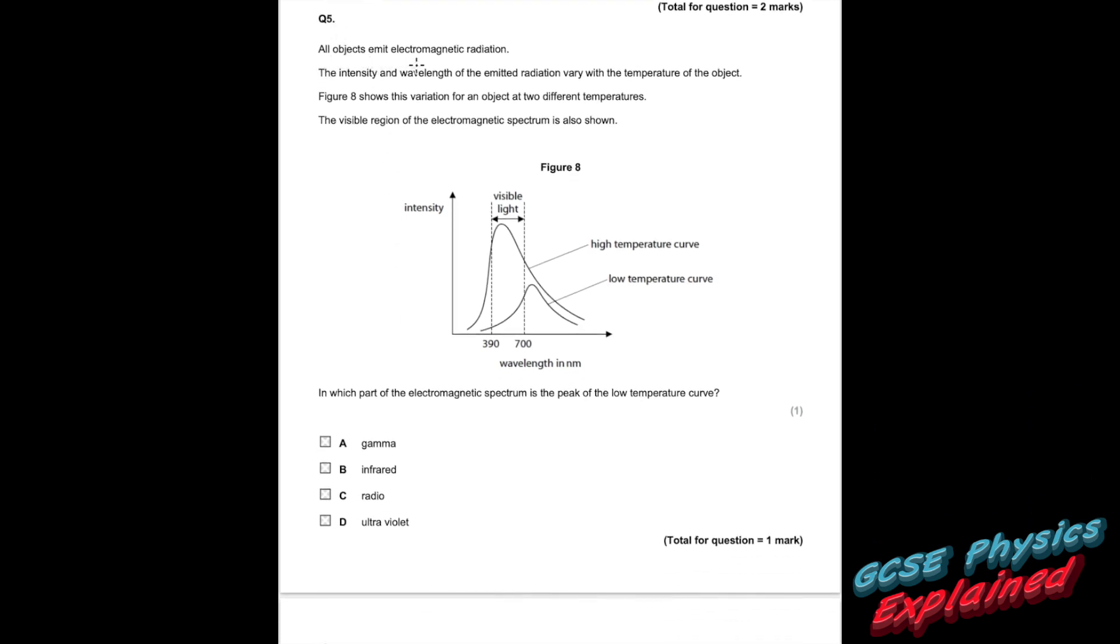Question 5. All objects emit electromagnetic radiation. The intensity and wavelength of the emitted radiation vary with the temperature of the object. Figure 8 shows this variation for an object at two different temperatures. The visible region of the electromagnetic spectrum is also shown. How many times have I told you, if you've been working your way through my videos, they just use the same questions every year. They change them slightly. It's like this year here, we've seen this graph just before. They've just turned it into a one mark question instead of whatever it was before, two marks, and they've turned it into a multi-choice. So the more of these questions you practice, you will start to see the same questions coming up all the time. And that builds your confidence.